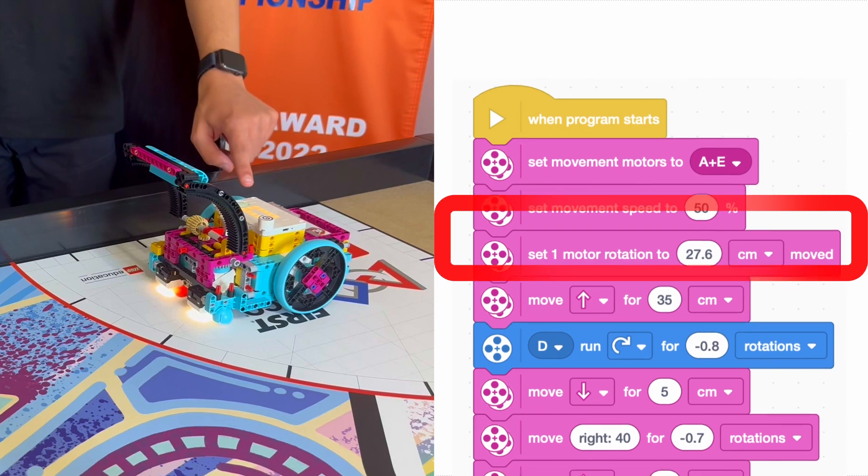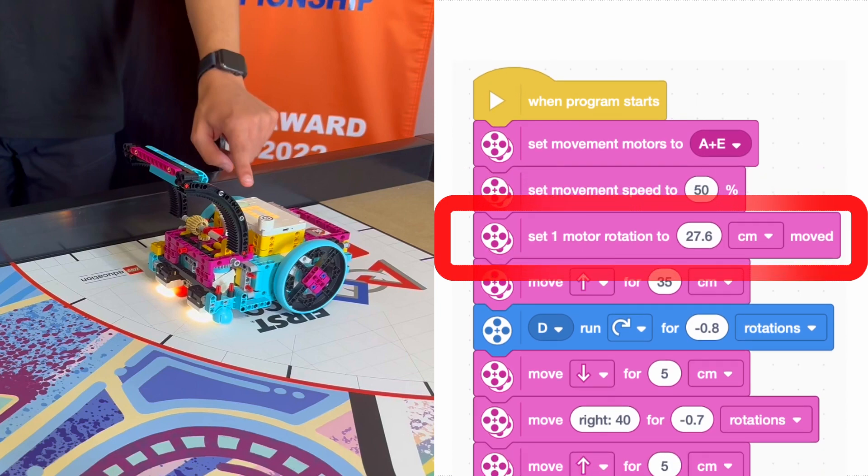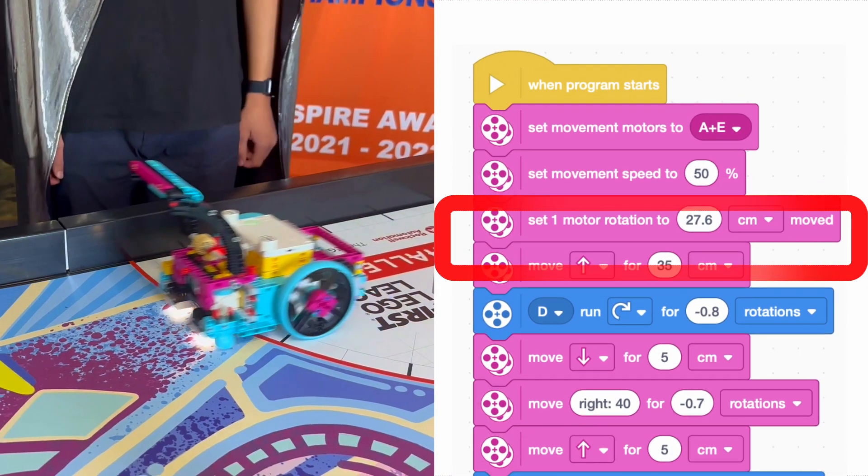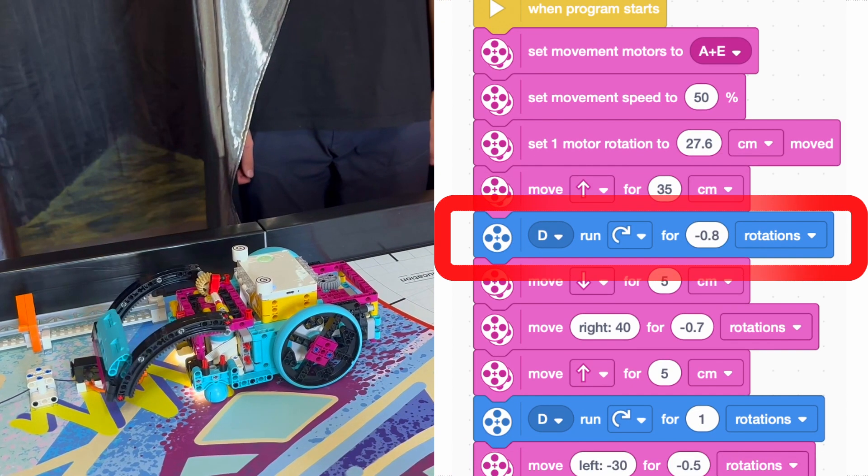We also put a block in to specify that our wheels are 27.6 centimeters in circumference. We then moved forward to get the rolling camera and rotated the motor connected to our attachment for negative 0.8 rotations, allowing our attachment to grip onto the rolling camera.